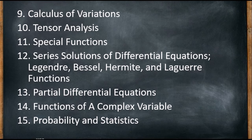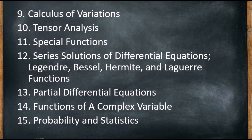Chapter fifteen, the last chapter, is about probability and statistics. We're going to learn about methods of counting, random variables, continuous distributions, binomial distributions, Gaussian distribution (the normal distribution), Poisson distribution, and some statistical and experimental measurements.